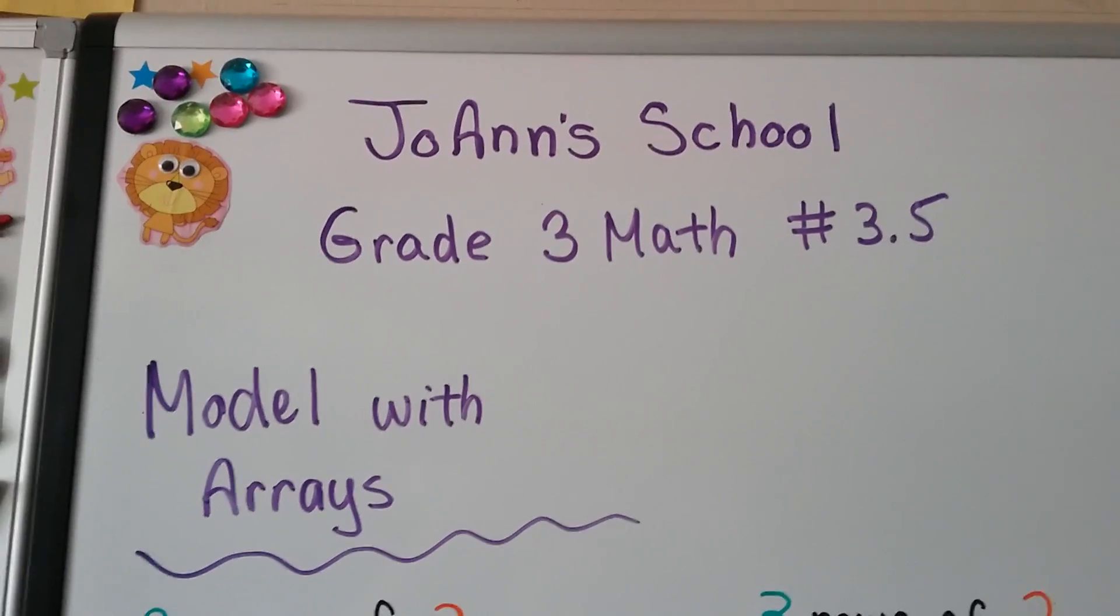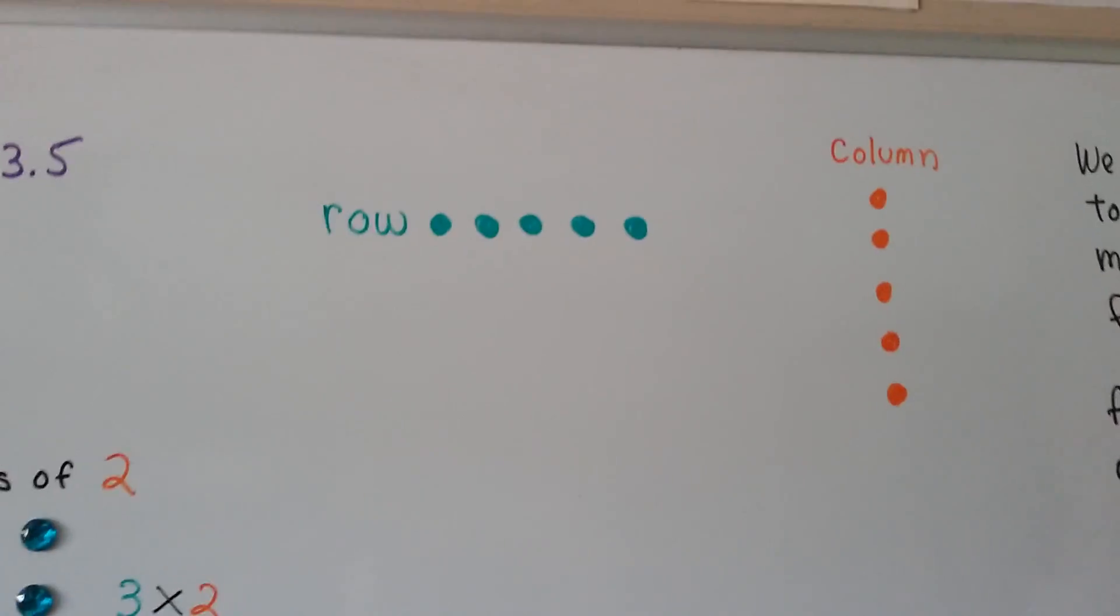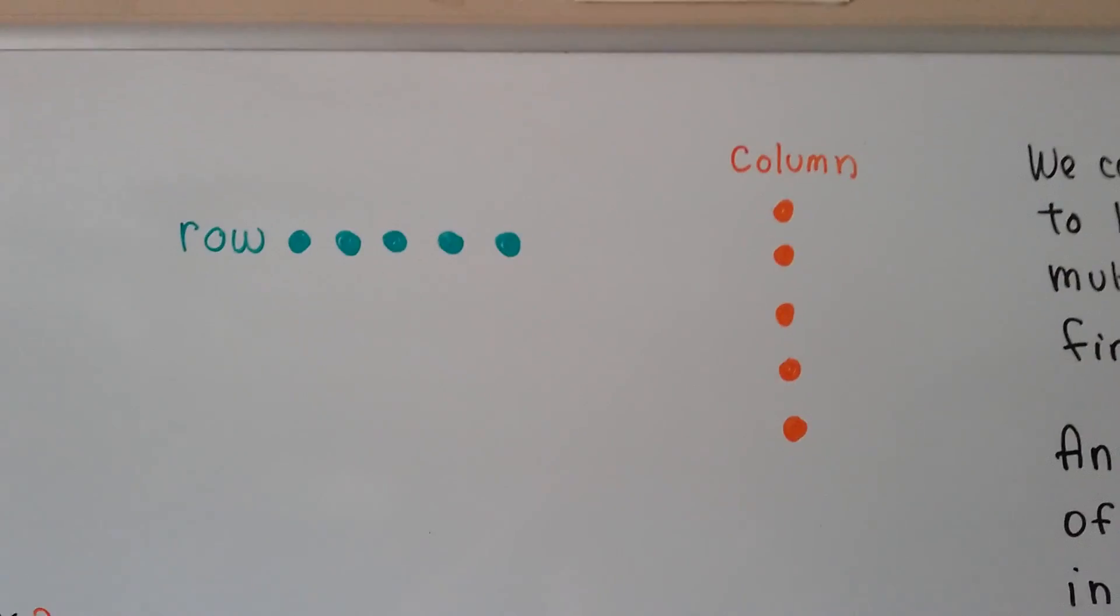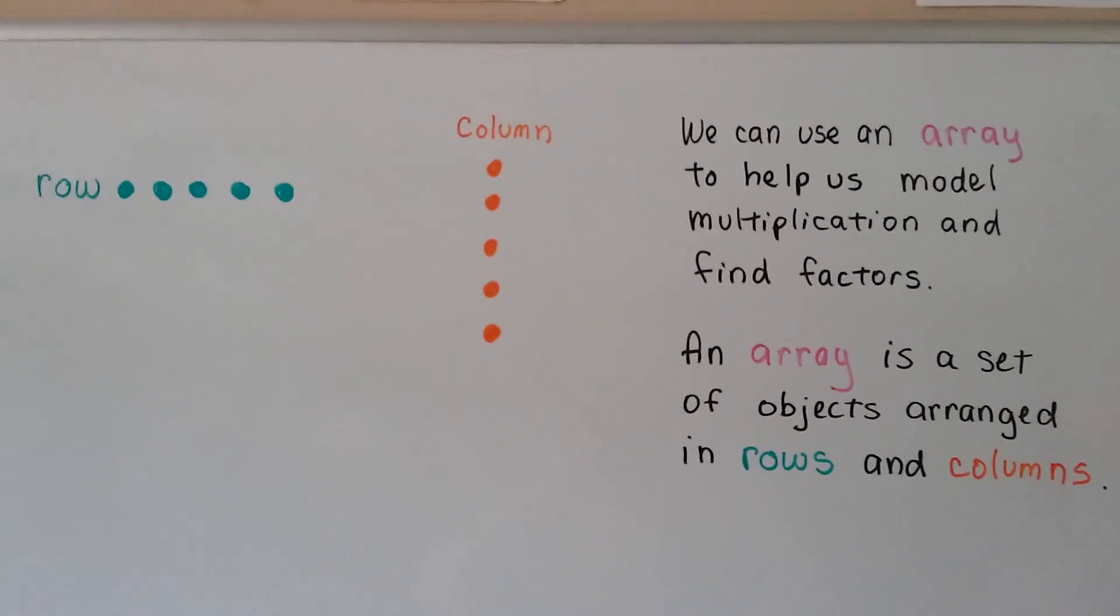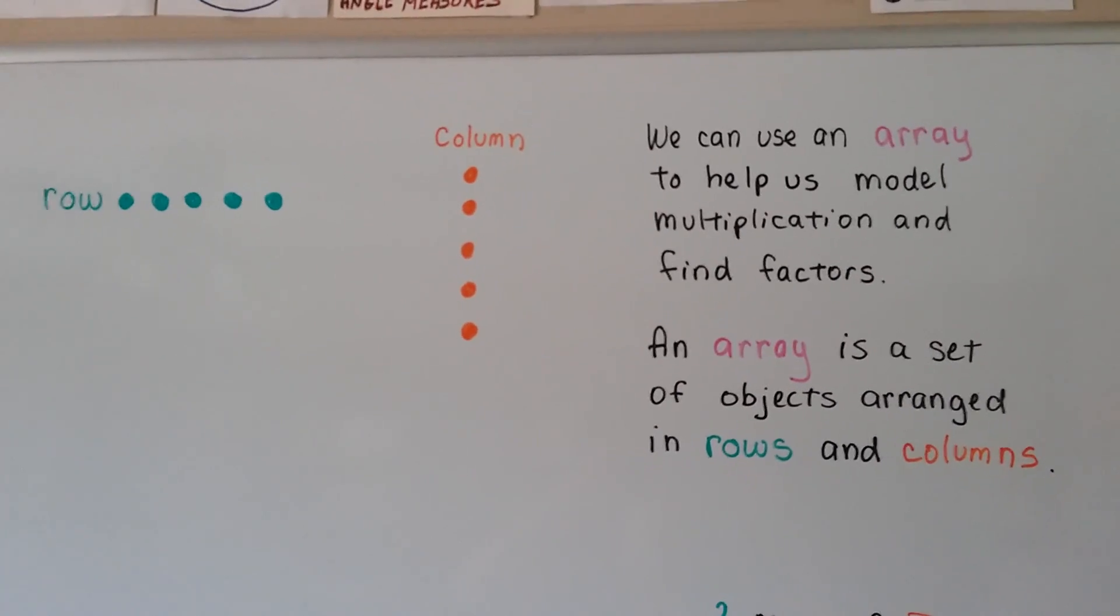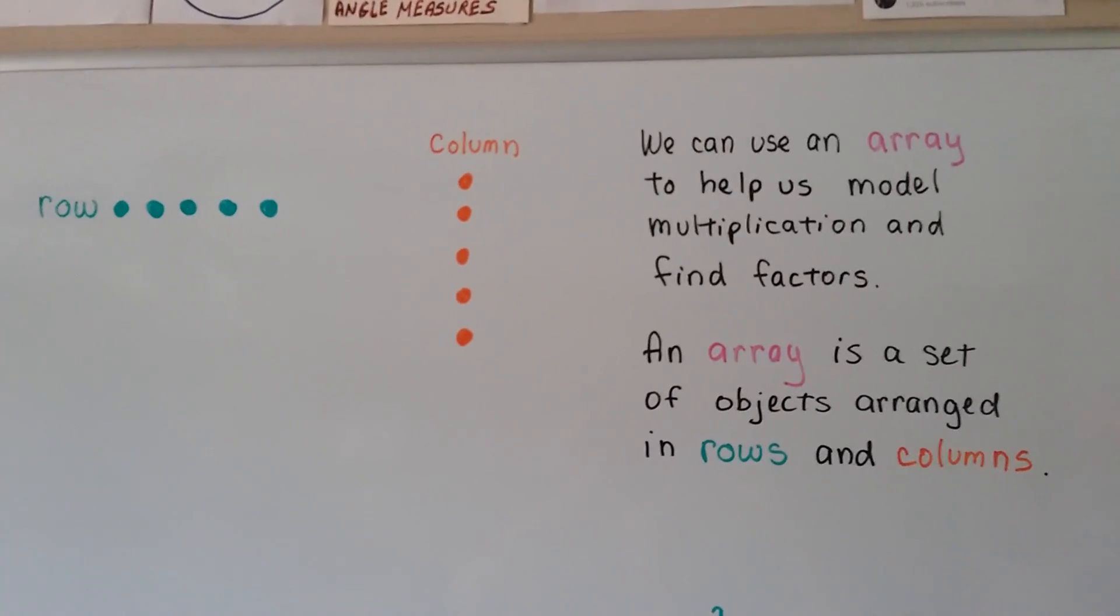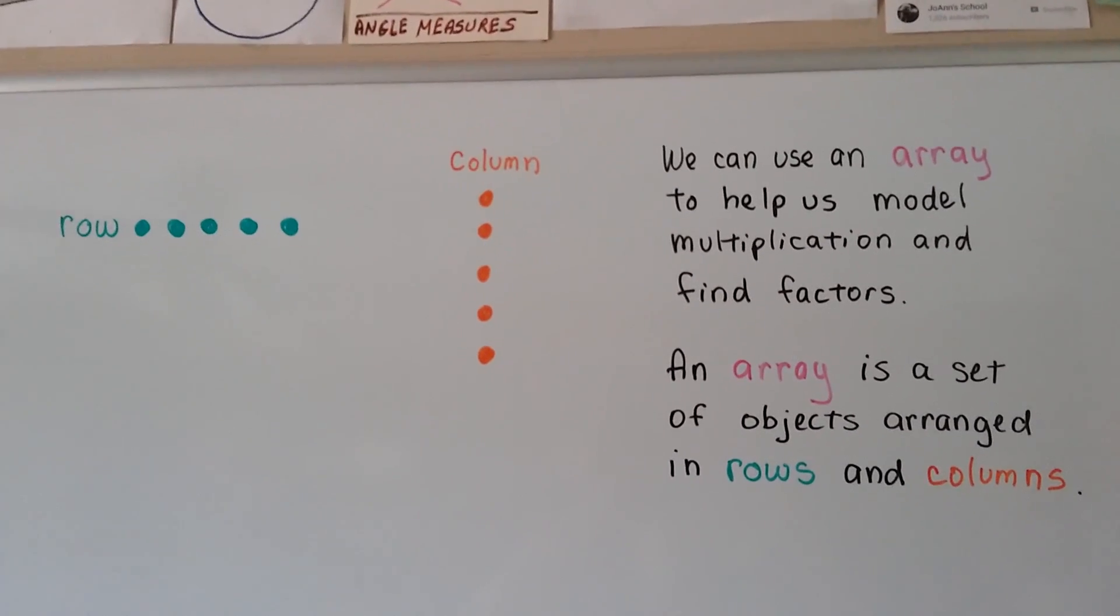Grade 3 math number 3.5, model with arrays. See, we have a row of dots and we have a column of dots. We can use an array to help us model multiplication and find factors. An array is a set of objects that are arranged in rows and columns. Rows go across and columns go up and down.